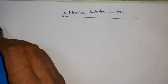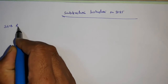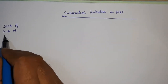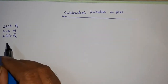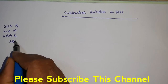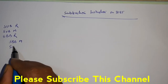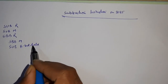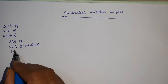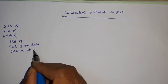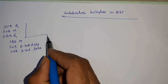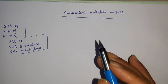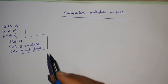Basically, these instructions are: SUB r, SUB M, SBB r, SBB M, SUI 8-bit data, and SBI 8-bit data. These are six instructions which are mainly used when you are going to perform any subtraction operation in the 8085 microprocessor. Now let me discuss each and every instruction one by one.